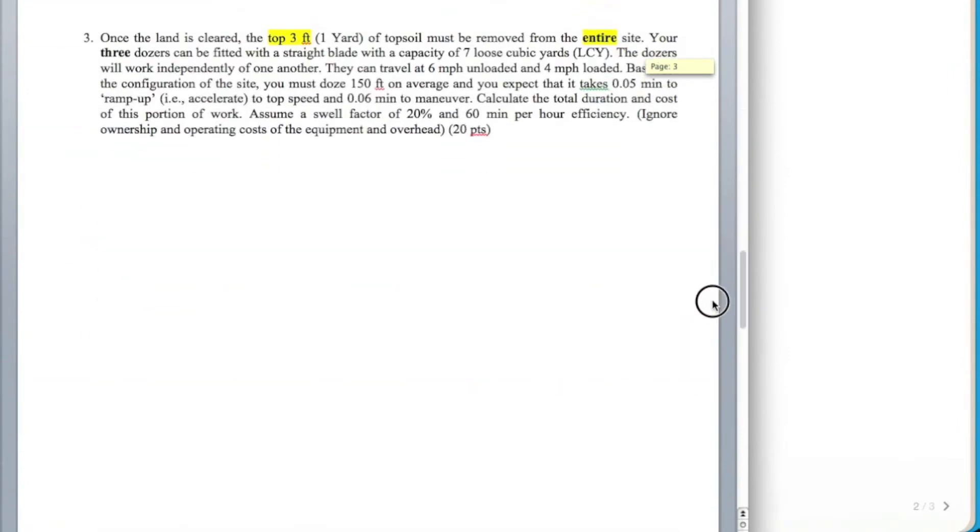Down back into the problem, number three, we've got three dozers, just keep that in mind. We're going to be dividing by three at some point. It's a straight blade, capacity here is seven. It comes into our equation. They're working independently, here's their speeds unloaded and loaded, 150 feet is our average push length. Here's some information on ramp up and maneuverability, maneuver time here. Here's what we want and a swell factor we're going to need. Here's our efficiency, so it's perfect efficiency.